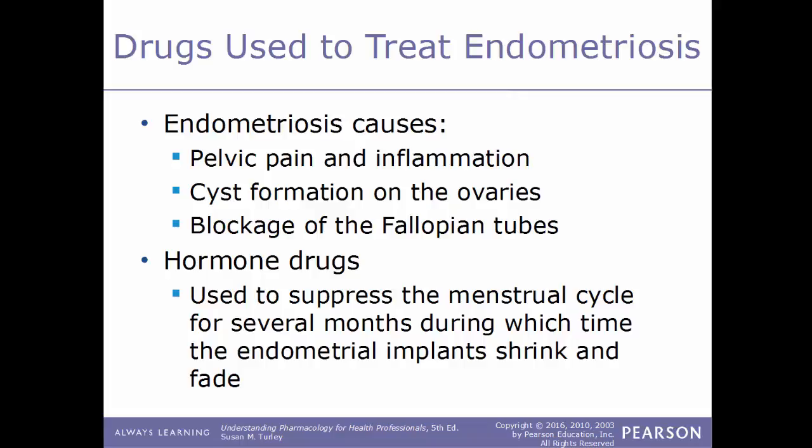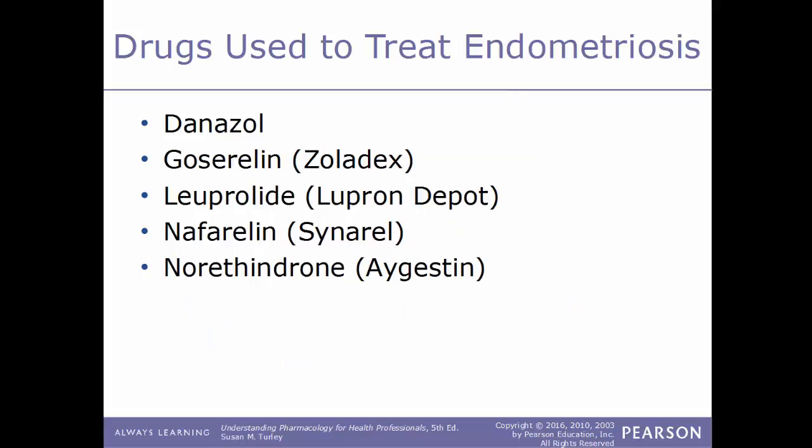Drugs used to treat endometriosis include hormone drugs to suppress the menstrual cycle for several months, during which time the endometrial implants shrink and fade. Examples include danazol, goserelin (Zoladex), leuprolide (Lupron Depot), nafarelin (Synarel), and norethindrone (Aygestin).